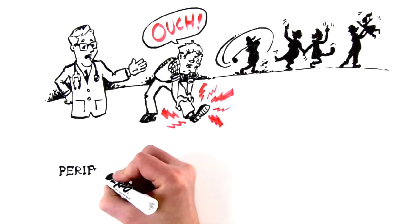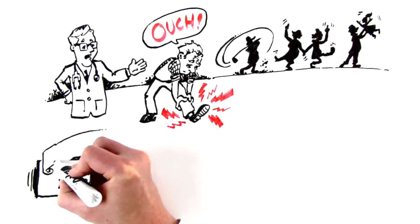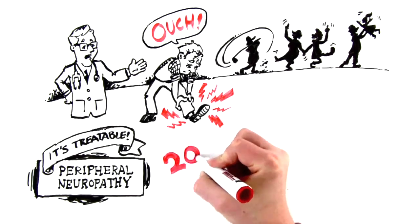Well, answering yes to any of these questions could mean you're living with a treatable health condition called peripheral neuropathy. That's right, treatable. And treatment is easier than you might think.